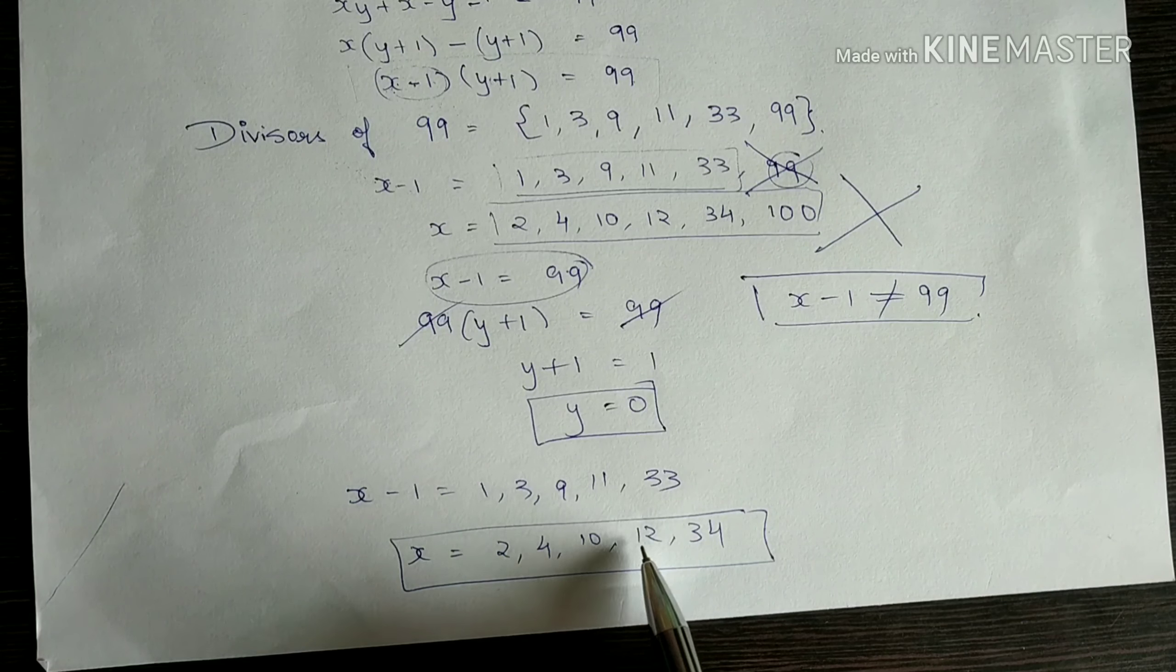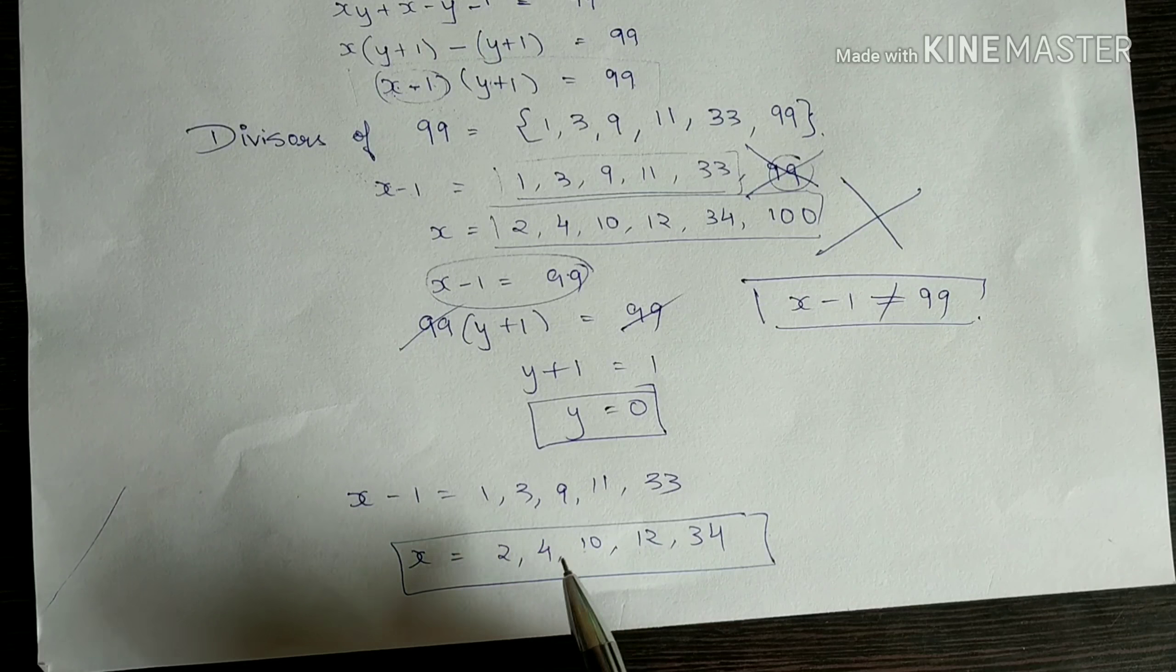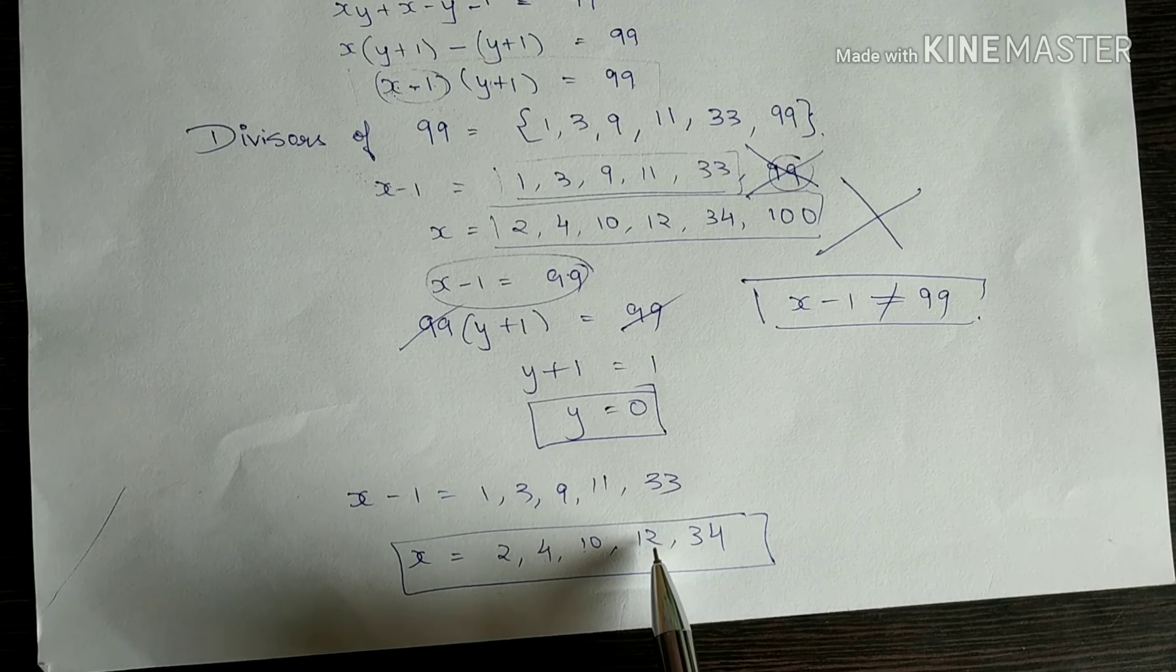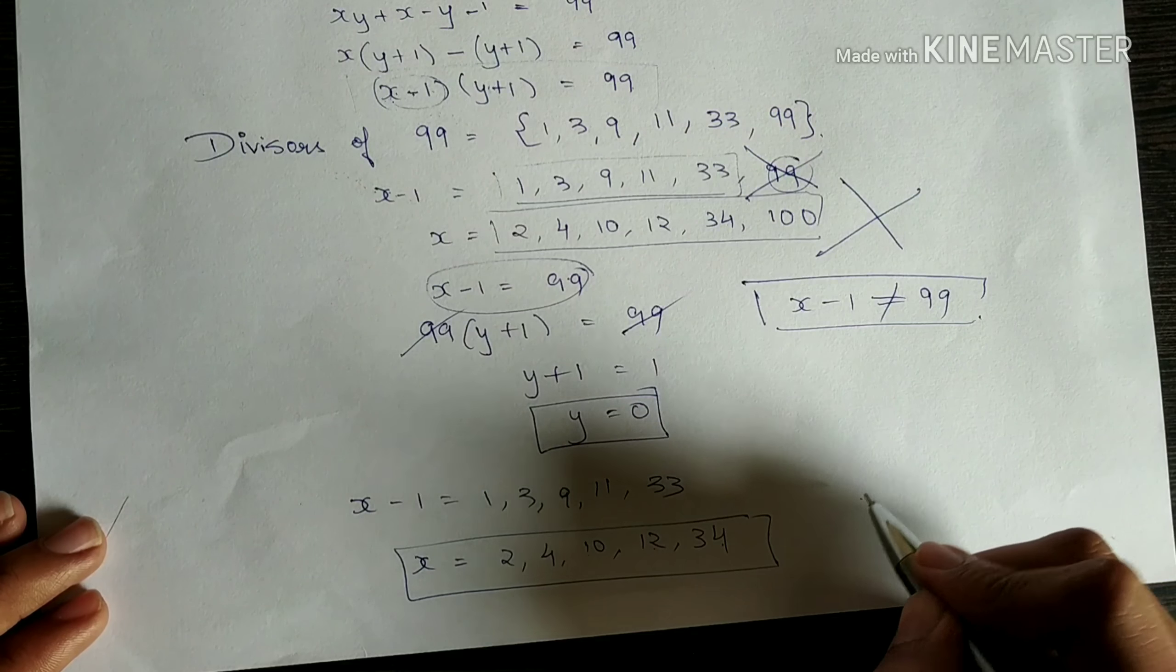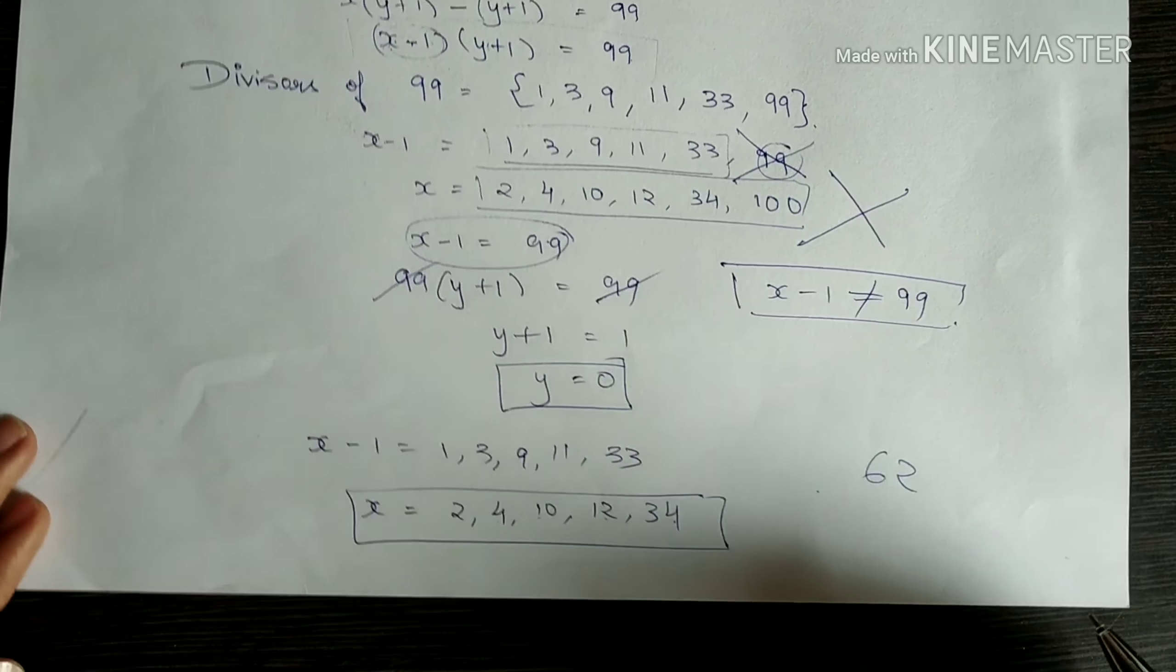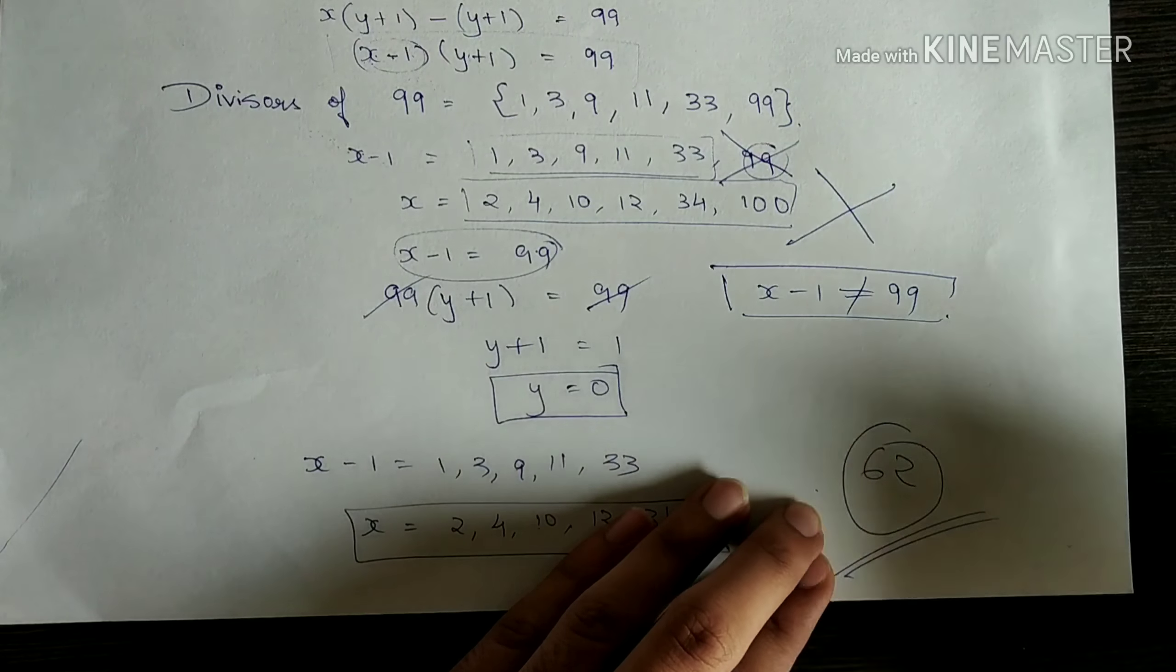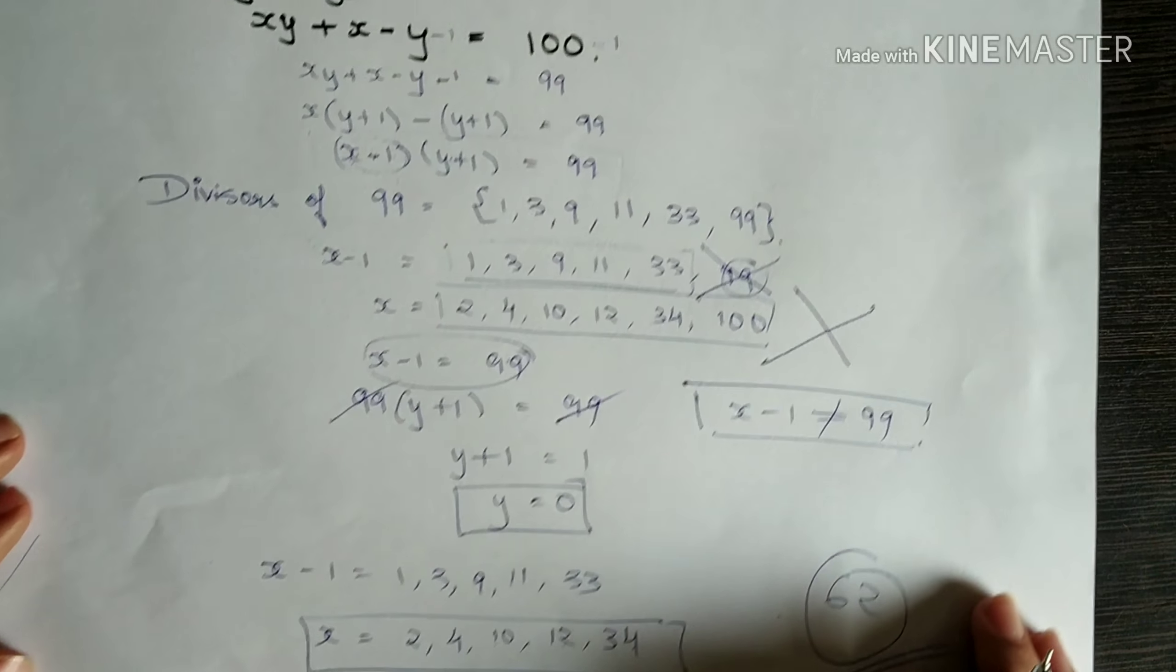So you get 30, 40, 50, 52, 56, 58, and 62. Hence sum of all values is 62, which is our correct answer. So thanks a lot for watching this video. Thank you.